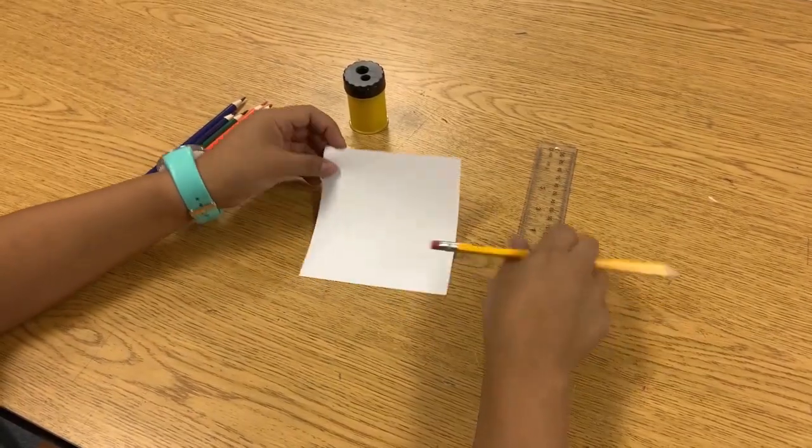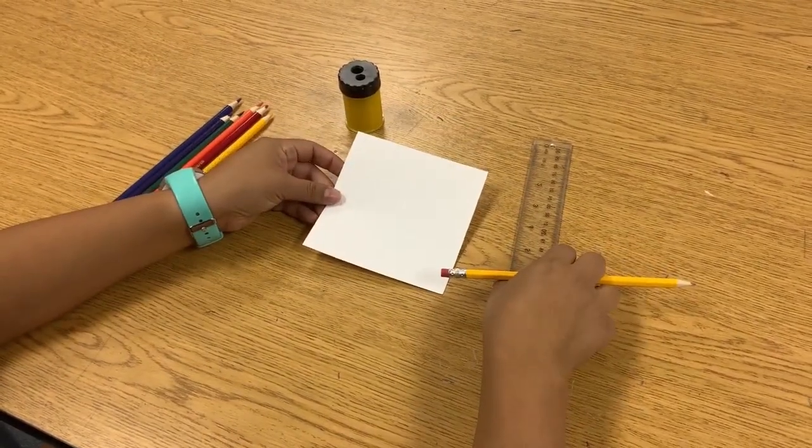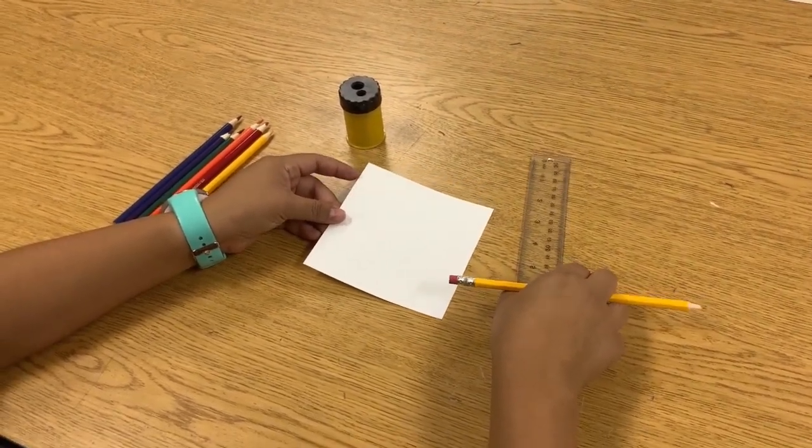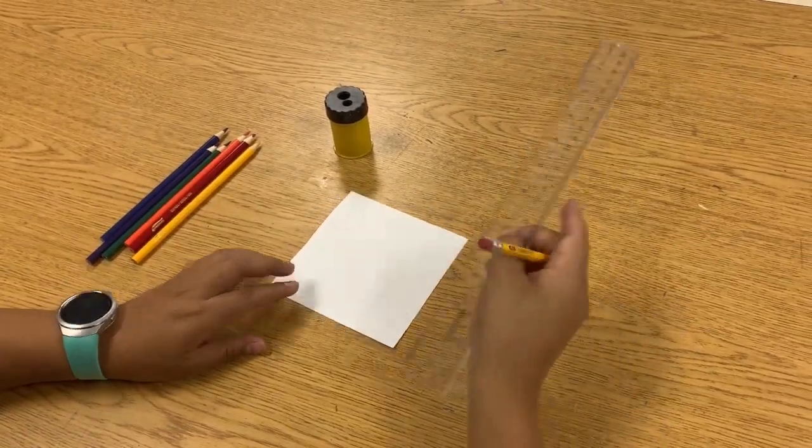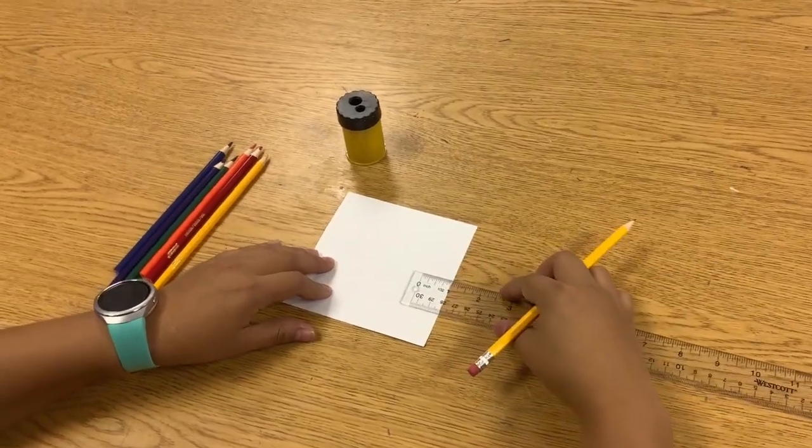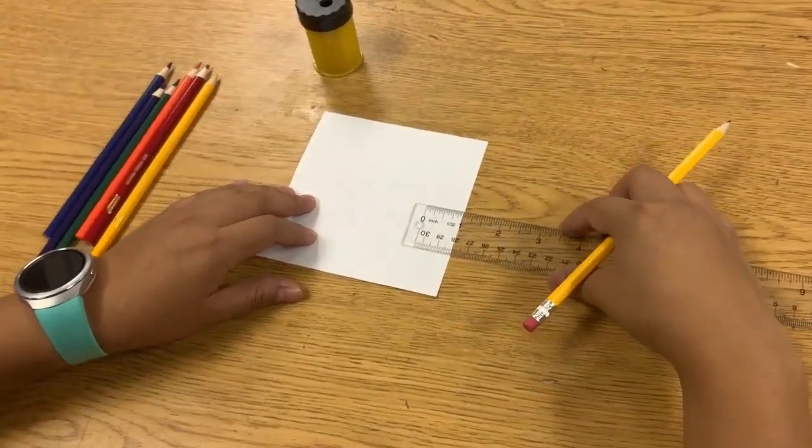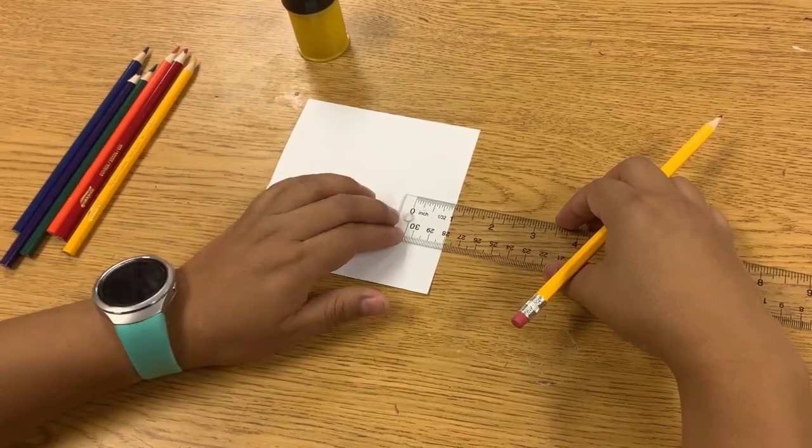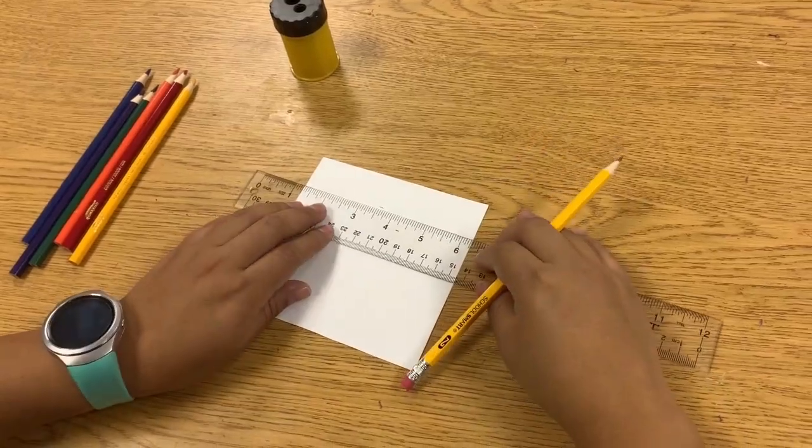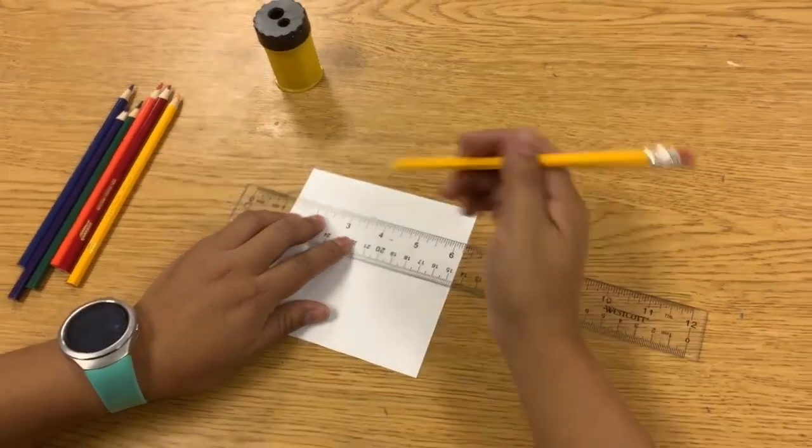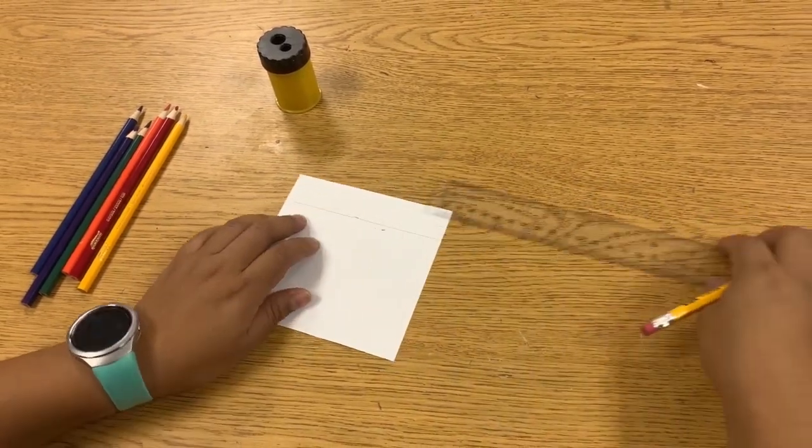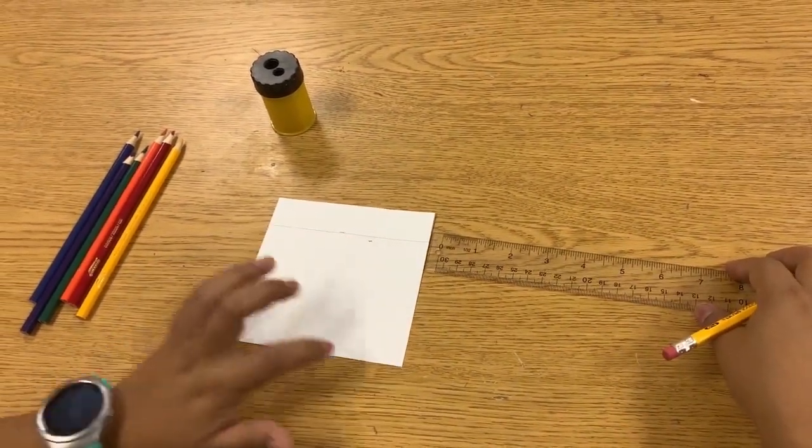So today I'll be working with a paper that is the shape of a square. If you can't get a perfect square shaped paper, just follow the same steps and you'll be okay. First I'm going to take my ruler and I'm going to measure one inch from the edge, so right around here. Then I'm going to draw a line at the one inch measure. I'm going to do that same thing on all four sides.